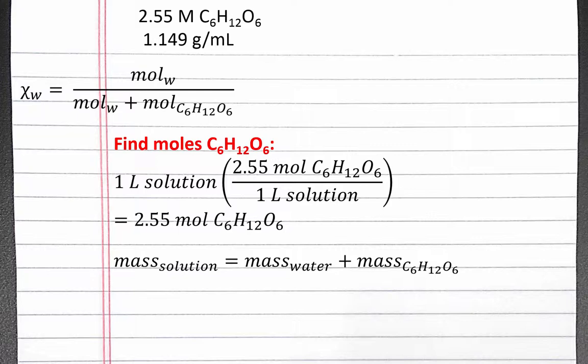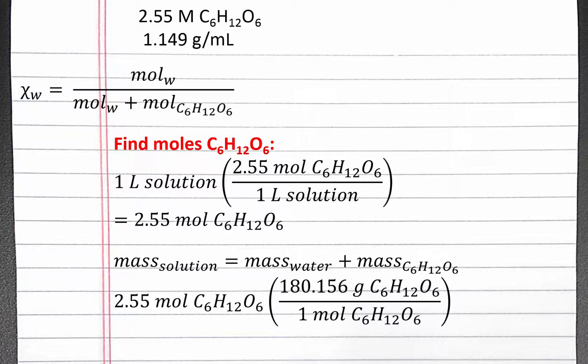2.55 moles of glucose can be converted into grams using its molar mass and dimensional analysis. We get 459.4 grams of glucose.